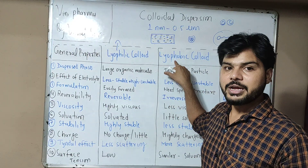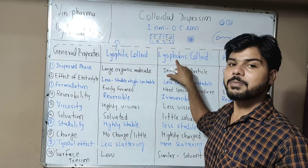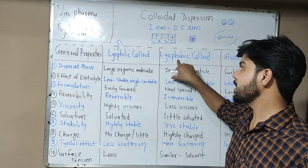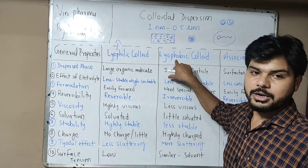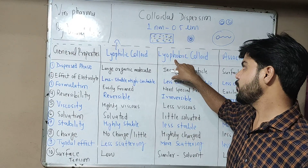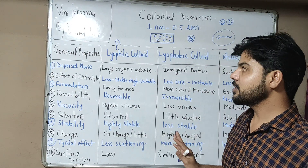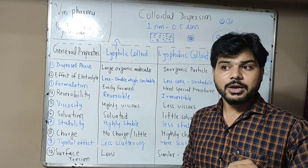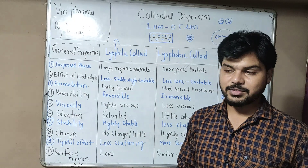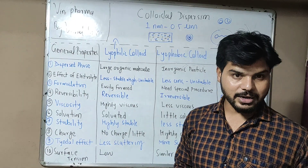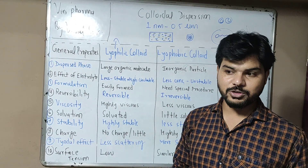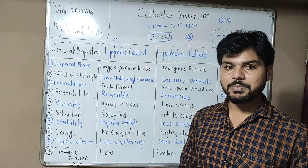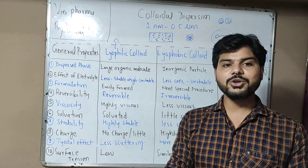Similarly, lyophobic colloids are called hydrophobic when water is the solvent, and lipophobic or organophobic when organic solvents are used. Colloids can also be classified in other ways — for example, on the basis of positive or negative particle charge, giving positive and negative colloids. This was a simple overview of the classification of colloidal systems. We will study more about them in the next classification. Thank you and all the best.